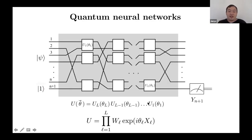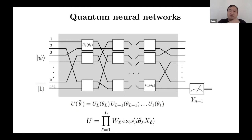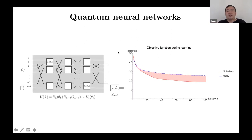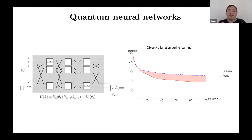Quantum neural networks are parametrized gates with variational angles theta, plus constant gates W_L, initialized by some state, followed by measurement to extract the answer. It might have complicated structure inside those unitaries, and you can train it with gradient descent. For instance, there is a small numerical example using IBM simulation with Qiskit. A key difference from classical is that current quantum devices have noise, which might induce some trouble, but people are already able to perform gradient descent numerical calculations on near-term devices.